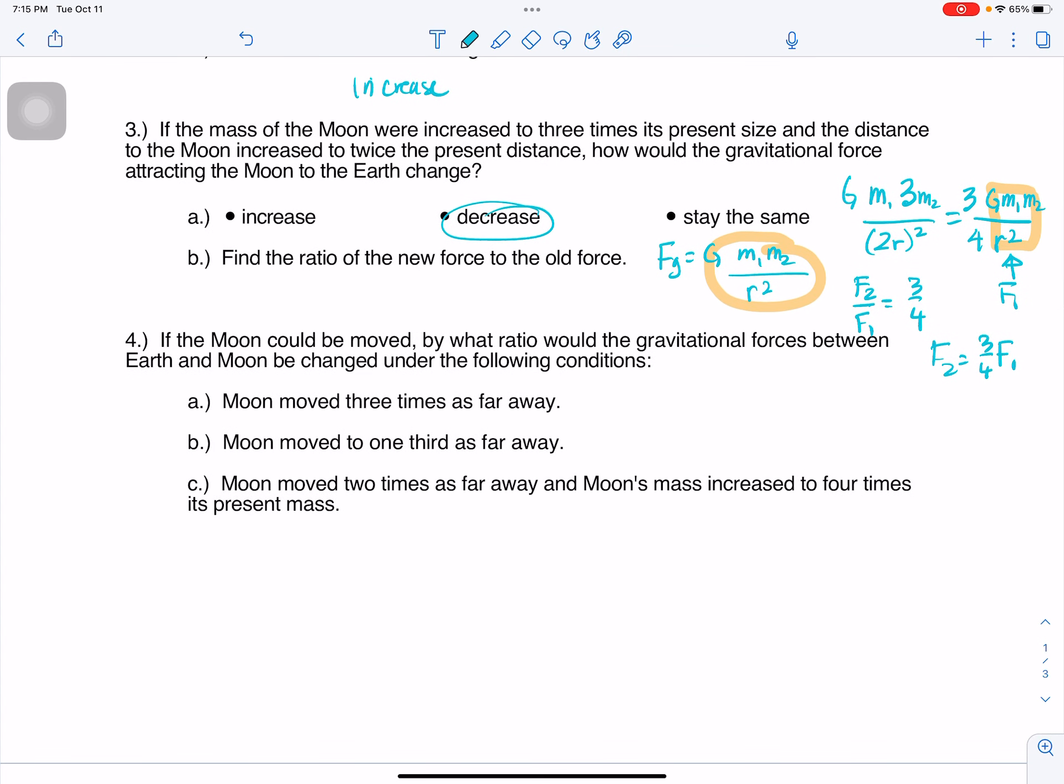All right, if the moon could be moved, by what ratio would the gravitational forces between the Earth and the moon be changed under the following conditions? So again, we can think about our F₁ is Gm₁m₂ over r squared. Our F₂, we are making the r three times as big. So I have Gm₁m₂ over 3r squared. I'm just going to pull out this three squared. I'm going to take the squared through the parentheses. And so that is going to give me 1 ninth Gm₁m₂ over r squared. And so that just tells me that F₂ is 1 ninth as big as F₁.